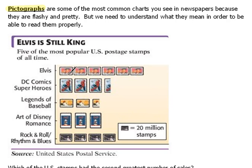Pictographs always have little icons related to whatever they're talking about — it could be money bags or whatever. They have several icons listed out and each represents a certain amount of something. In this example, we see a pictograph titled 'Elvis is Still King: Five of the Most Popular US Postage Stamps of All Time.'